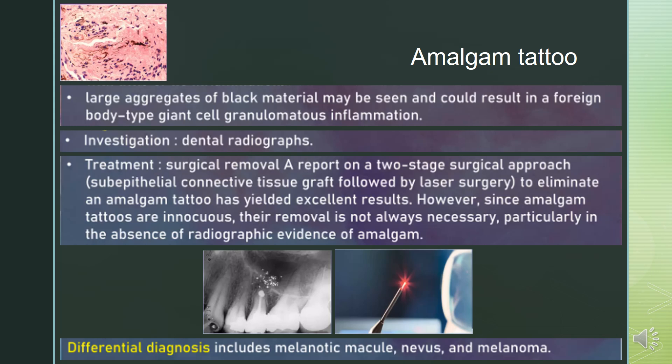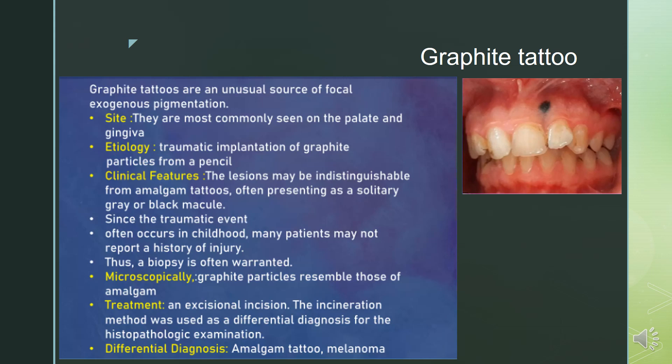Differential diagnosis can be melanotic macule, nevus, and melanoma. Regarding graphite tattoo, they are an unusual source of focal exogenous pigmentation, most commonly seen on the palate and gingiva. They are caused due to traumatic implantation of graphite particles from a pencil. The lesions may be indistinguishable from amalgam tattoos, often presenting as a solitary gray or black macule.